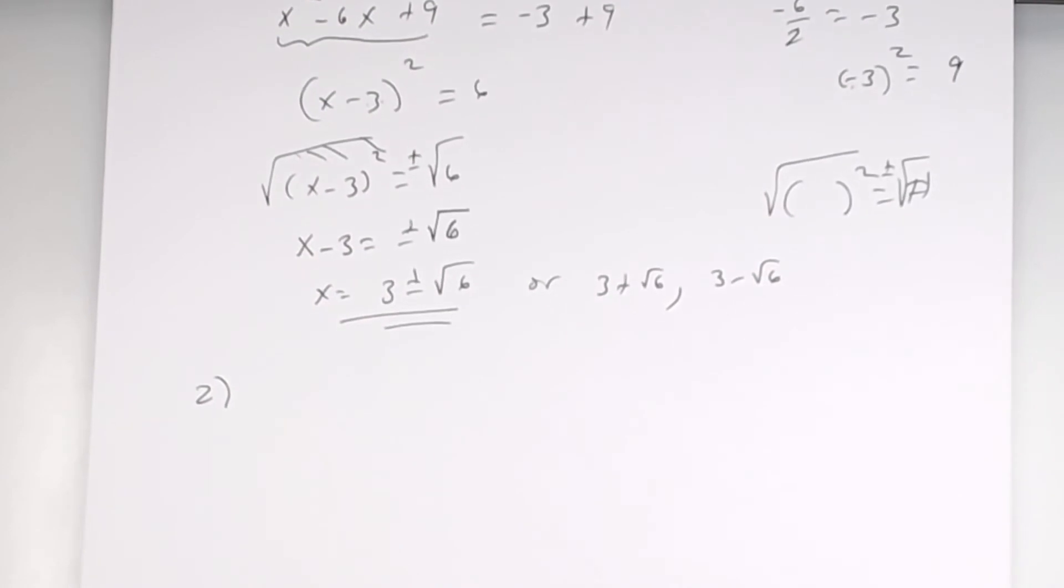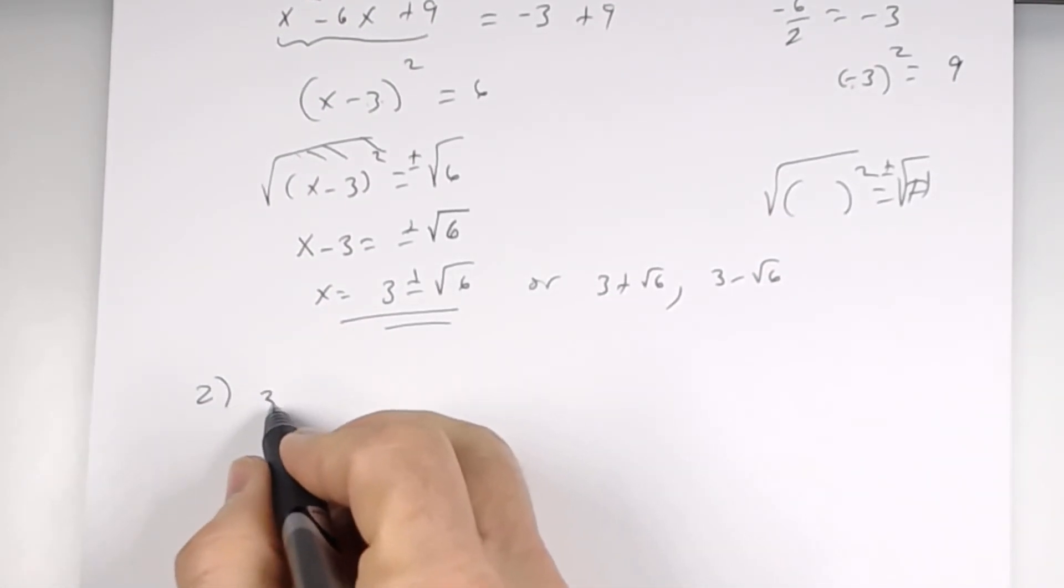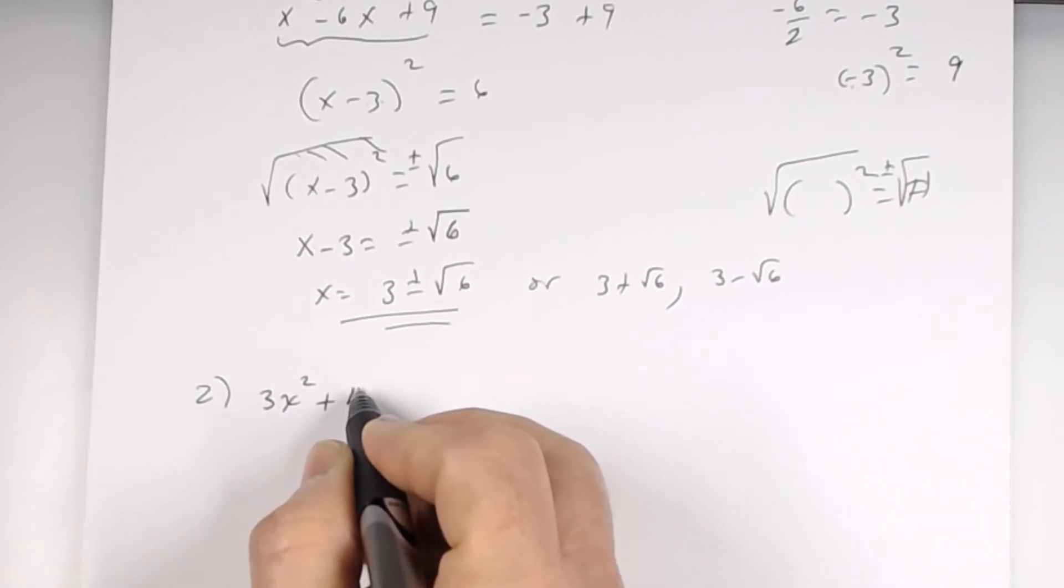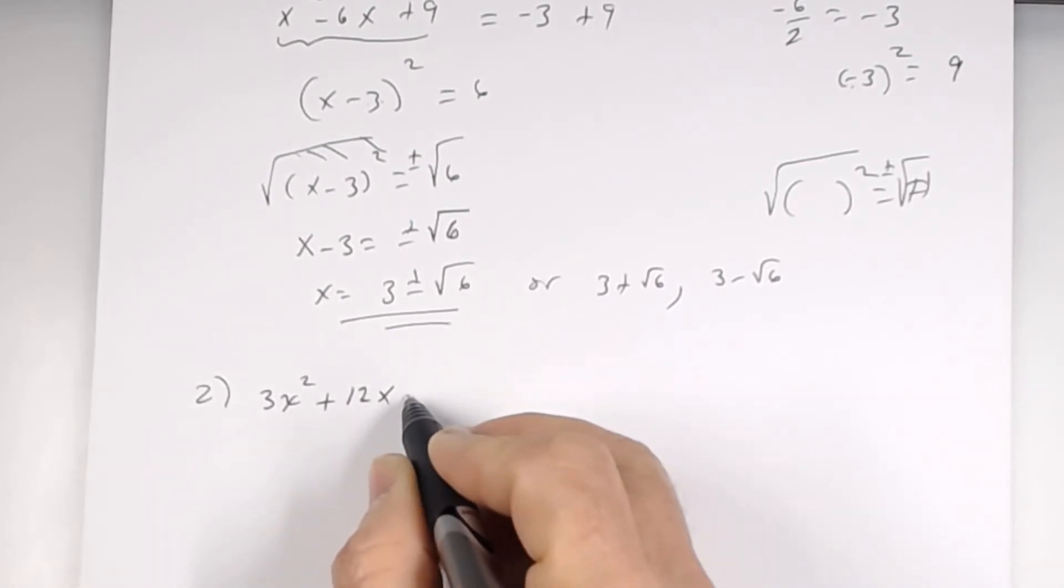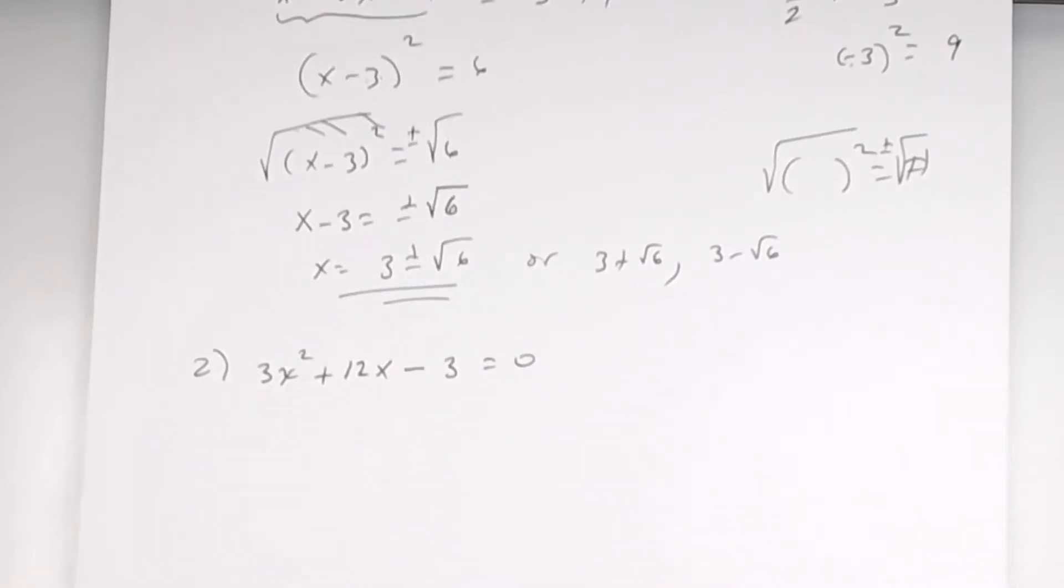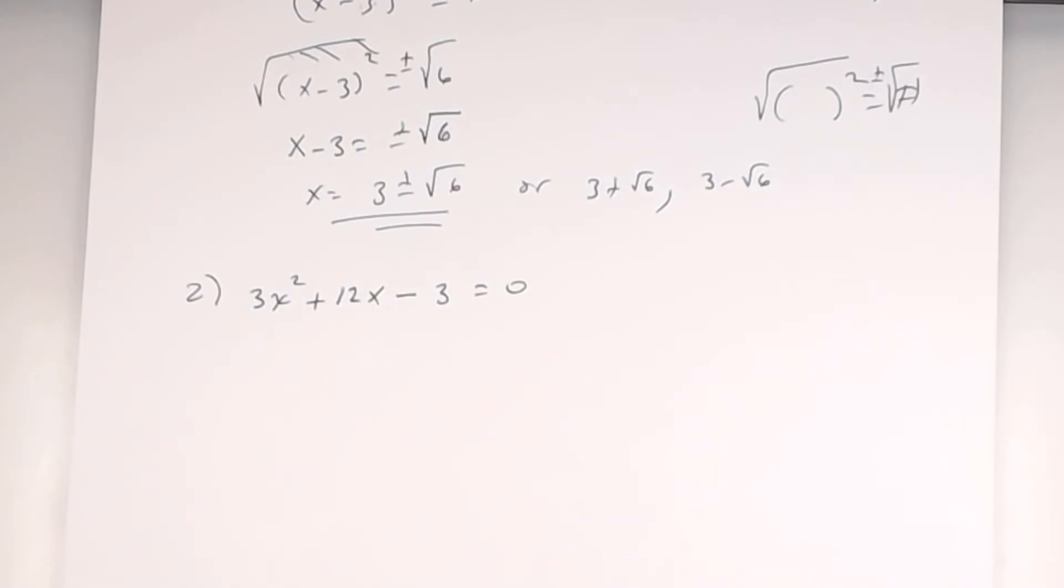Number 2. Suppose at number 2, I had 3x squared plus 12x minus 3 equals 0. So, 3x squared plus 12x minus 3 equals 0.